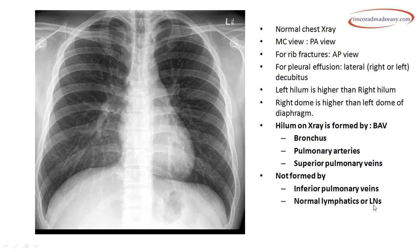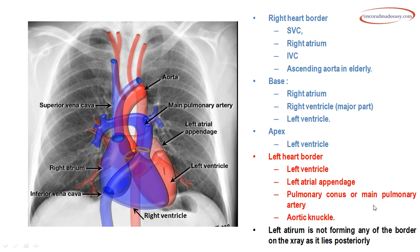The hilum is not formed by the inferior pulmonary veins, normal lymphatics, or normal lymph nodes. A very basic but repeatedly asked question is about the cardiac borders. The right heart border is formed by the superior vena cava, right atrium, and inferior vena cava. The left heart border is formed by the left ventricle, left atrial appendage, pulmonary artery, and aortic knuckle. The left atrium lies posteriorly and does not form any cardiac border on the PA view.